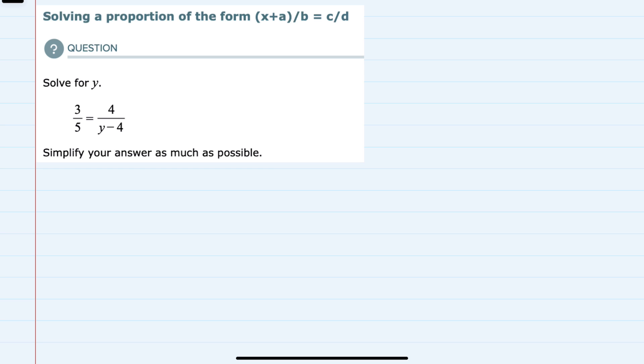We're asked to solve for y, and we have these two fractions that are equal to each other. What we're going to do is get a common denominator for the two fractions. And once we have that, we'll know that the numerators have to be equal to each other. So our two denominators, 5 and y minus 4, a common denominator would need both of those.